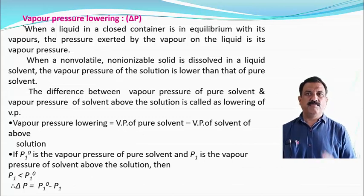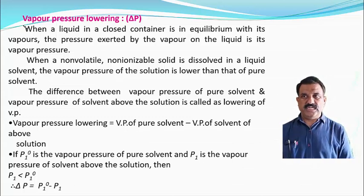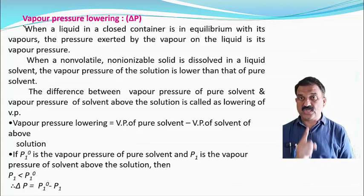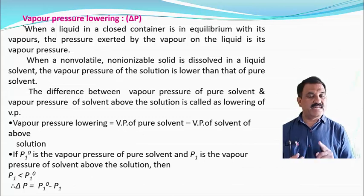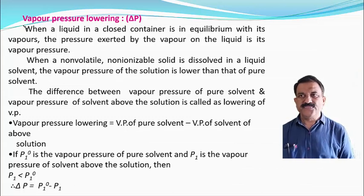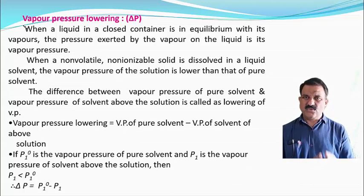Let us take the mathematical equation. P₁⁰ is always called the vapour pressure of the pure solvent — the superscript 0 represents the pure state. We consider a binary solution, that is, solvent as well as solute. In notation, 1 always indicates the solvent and 2 indicates the solute. Hence, P₁⁰ is the vapour pressure of pure solvent, and P₁ is the vapour pressure of the solvent above the solution — in short, the vapour pressure of the solution.